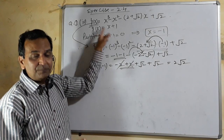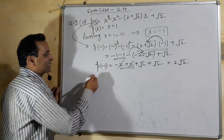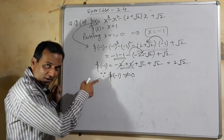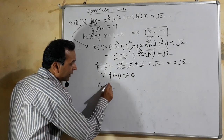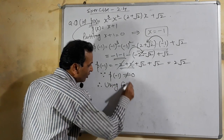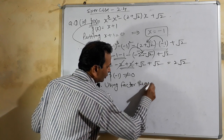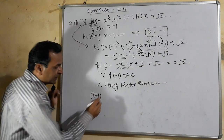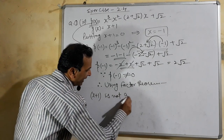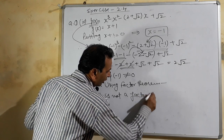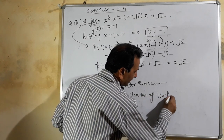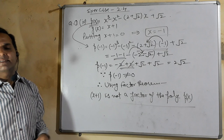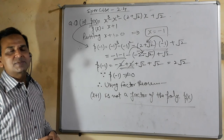It means divisor x + 1 is not a factor of the polynomial P(x). Because P(-1) is not equal to 0, therefore by using Factor Theorem, divisor G(x) = x + 1 is not a factor of the polynomial P(x). The same method was applied one more time.